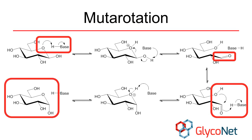In this mechanism, it is the C5 hydroxyl group that is the nucleophile. If the C4 hydroxyl acts as the nucleophile instead, a five-membered furanose ring would form.